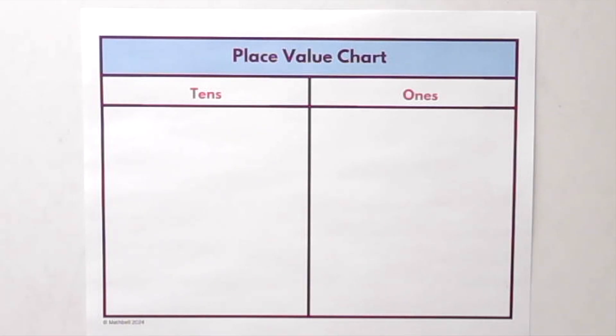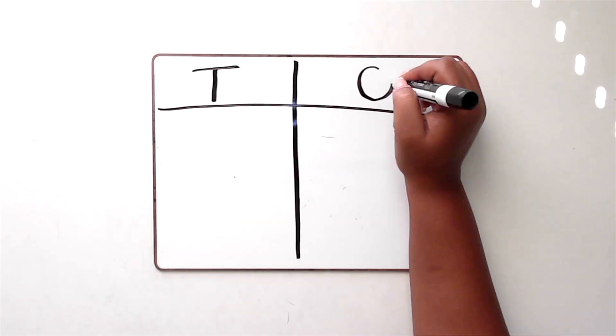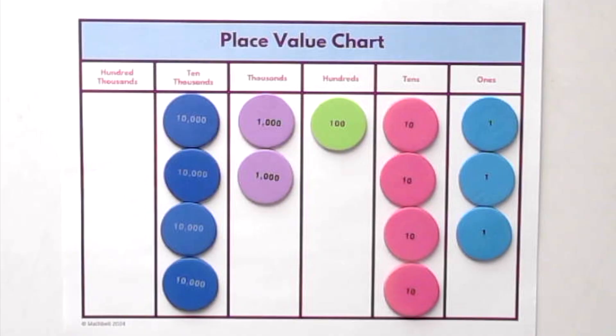I often pair them with a place value chart. You can use a printed one, draw one out on a whiteboard, or sketch it out on a desk or table. This helps students line up the blocks with each place and reinforce the structure of our number system.